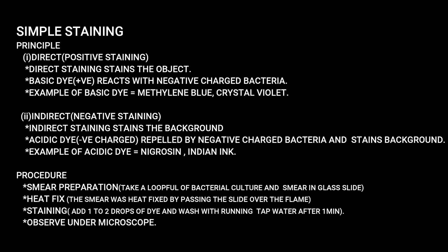The first one is simple staining. This is a simple and basic method. The principle has two parts. First: direct staining — positive staining method. Direct staining stains the object. Basic dye reacts with negatively charged bacteria. Examples of basic dye: methylene blue, crystal violet. Second: indirect negative staining. Indirect staining stains the background. Acidic dye is repelled by negatively charged bacteria and stains the background. Examples of acidic dye: nigrosin, Indian ink.